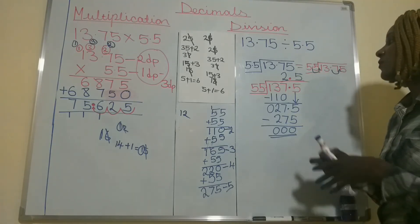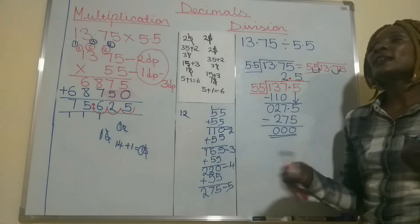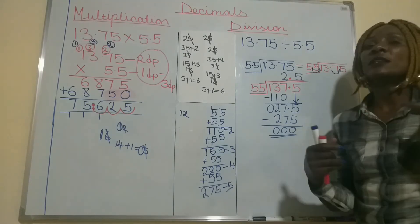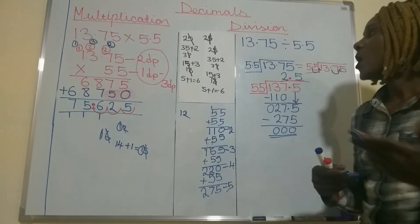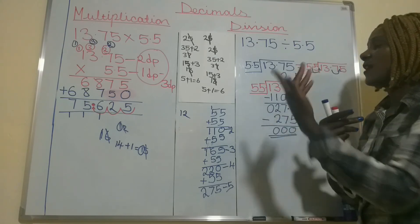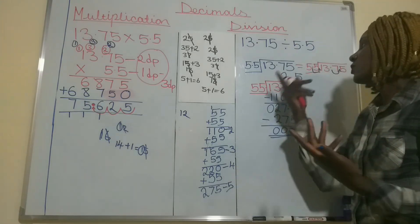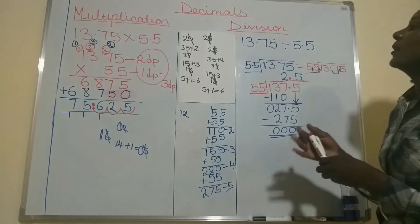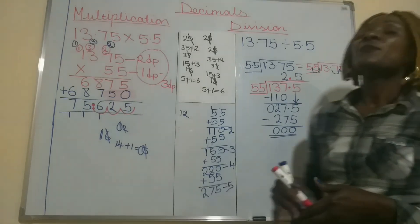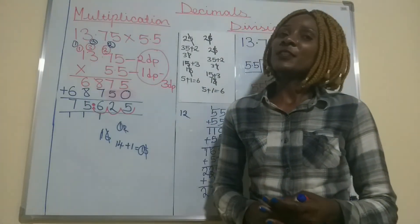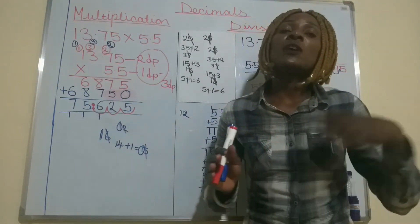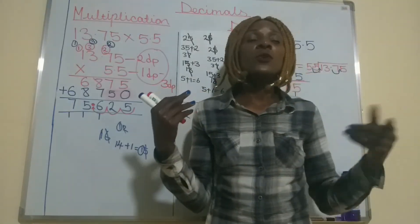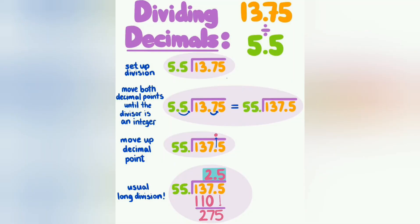This is how we divide decimals. You divide normally, but the key thing to note is the decimal point: you make your divisor a whole number by getting rid of its decimal point before you start dividing. That's the end of this lesson. In my next lesson, I'm going to cover more on the other components of decimals. Thank you.